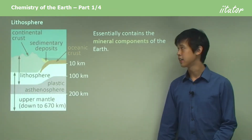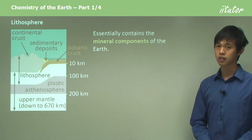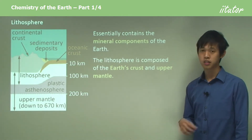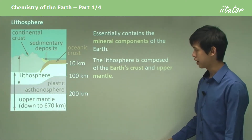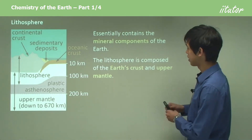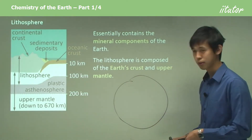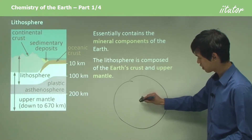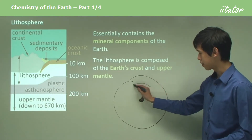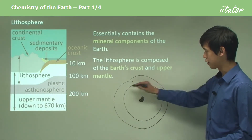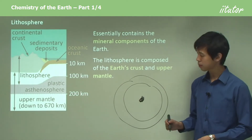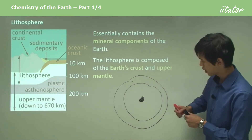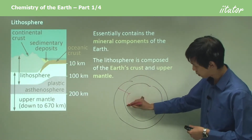The lithosphere is essentially any mineral component that we see on the Earth. It is composed of the Earth's crust and the upper mantle. If we imagine the Earth, you've got the core in the very middle, which is very dense, then the mantle which is liquid, and then the crust on the outside. The lithosphere only takes up the crust and the top part of the mantle.